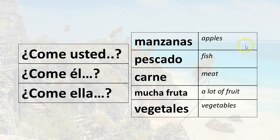Does she eat apples? Come ella manzanas. Does she eat fish? Come ella pescado. Does she eat meat? Come ella carne. Does she eat a lot of fruit? Come ella mucha fruta. Does she eat vegetables? Come ella vegetales.